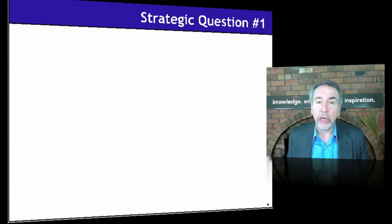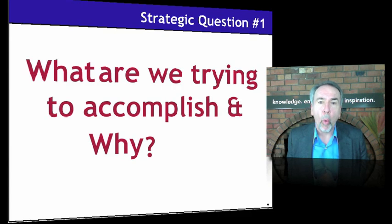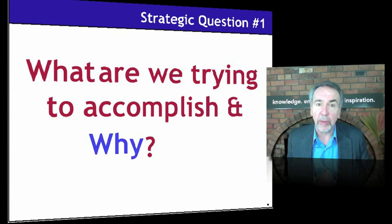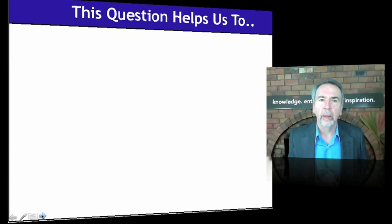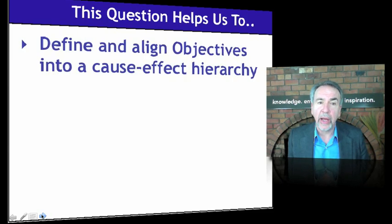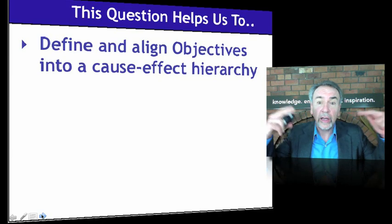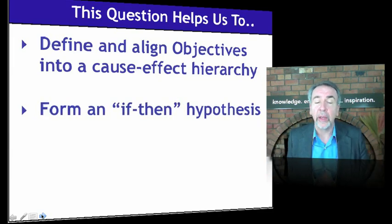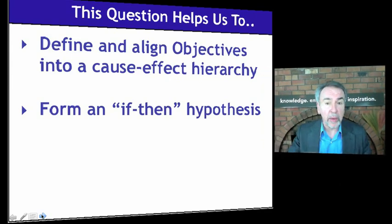So here's how to make your goals smarter. Let's begin by asking the question: what are we trying to accomplish and why? Putting the emphasis on the why, and also defining some of the whats, you will end up with a series of short phrases — I call these objectives — which we can then arrange into a logical order. This question helps us to define and align objectives into what I call a cause-effect hierarchy, a logical hierarchy, to form an if-then hypothesis which relates objectives to each other.